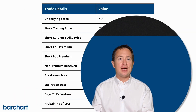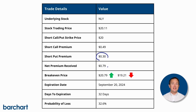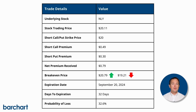For this example, I'll use NLY stock as the underlying asset. It suggests writing the $20 strike short call and put, receiving $0.49 and $0.30 respectively, for a total of $0.79 in premium for the whole trade. This short straddle will expire on September 20th, 2024, approximately 32 days from this recording, and has the lowest loss probability of the results at 32.6%.